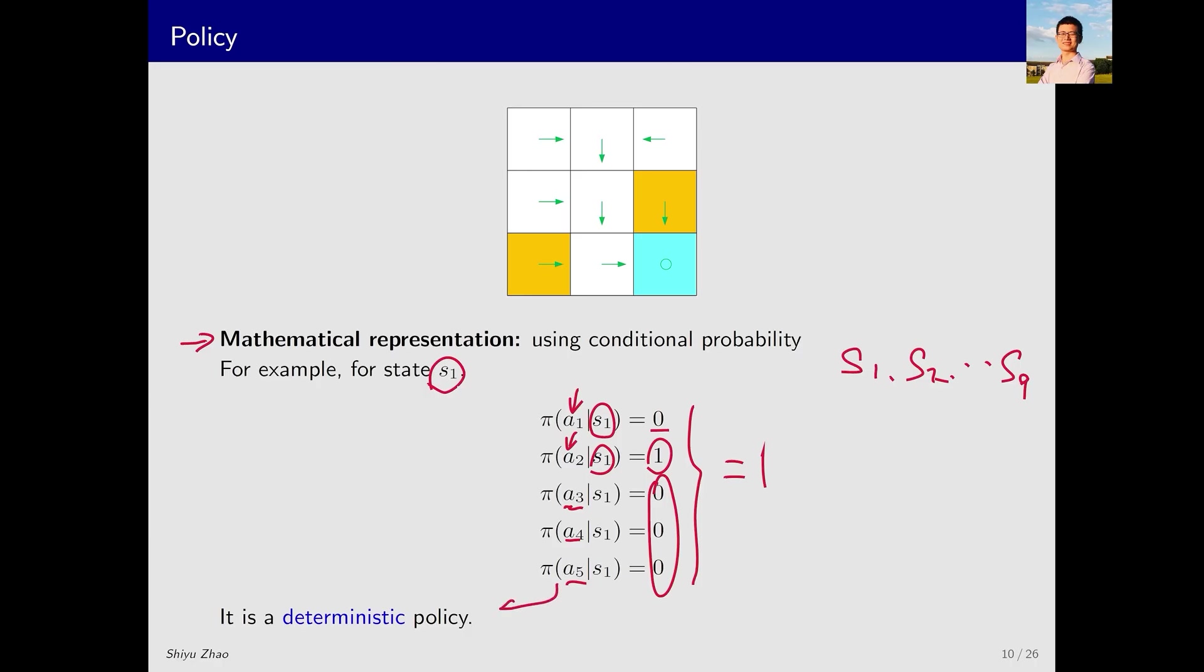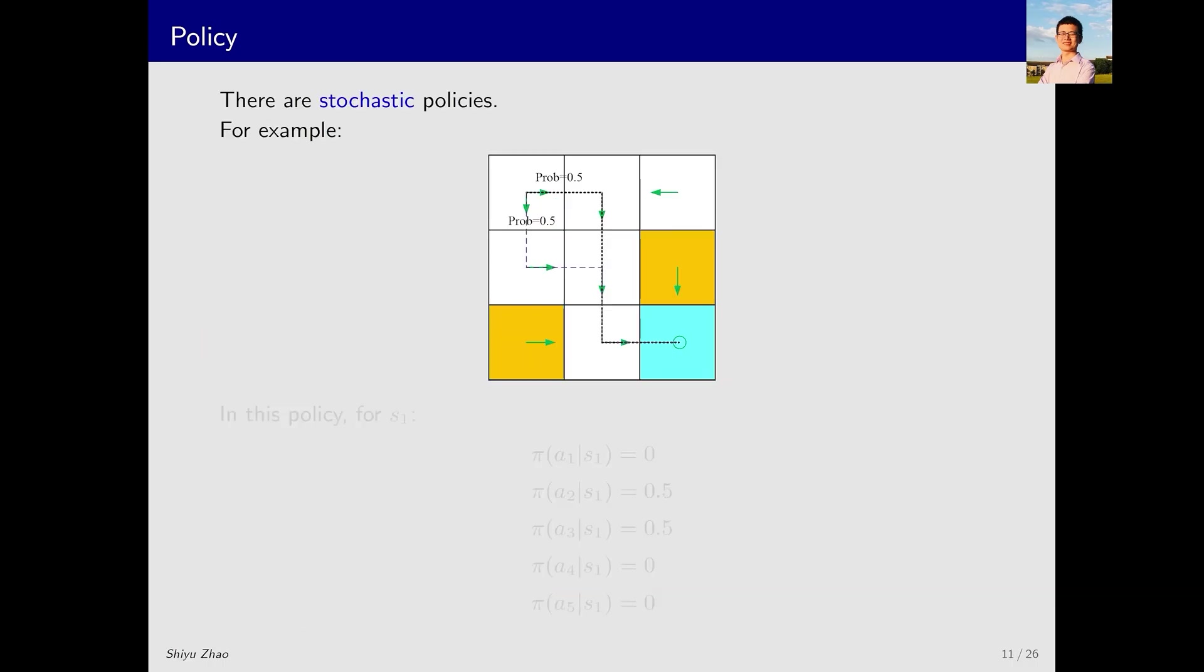The scenario mentioned above is deterministic, meaning that in state S1, action A2 is always taken. However, there are also stochastic policies where the outcomes are not certain. For instance, starting from here, the policy has a 0.5 probability of moving right and a 0.5 probability of moving down. As a result, the actual action could vary, leading to different paths like this and this. Representing this using conditional probabilities is straightforward. In state S1, the probability of taking action A2 is 0.5, and the probability of taking action A3 is 0.5, with the sum of these probabilities equal to 1. Naturally, the probabilities of all other actions are 0 and are often omitted. As we know, every action has a probability, even if that probability is 0.